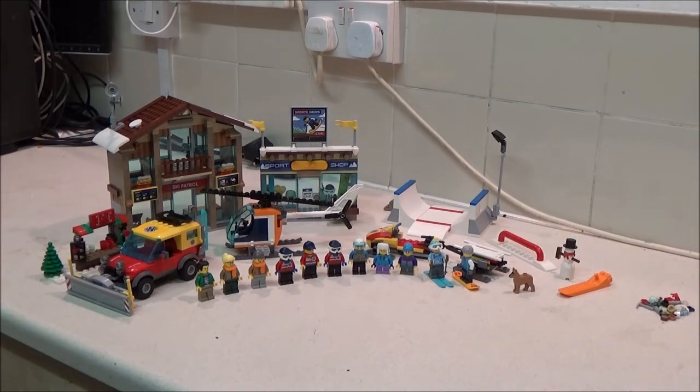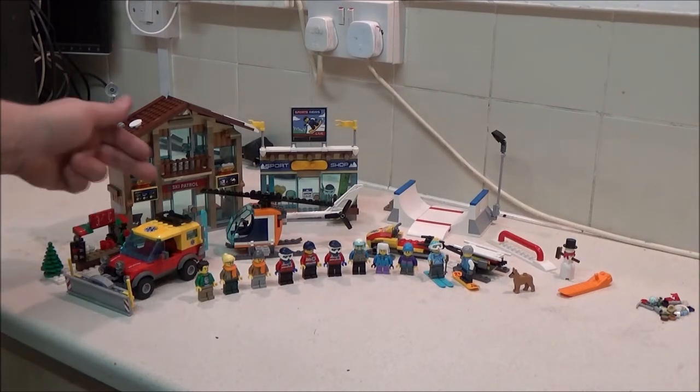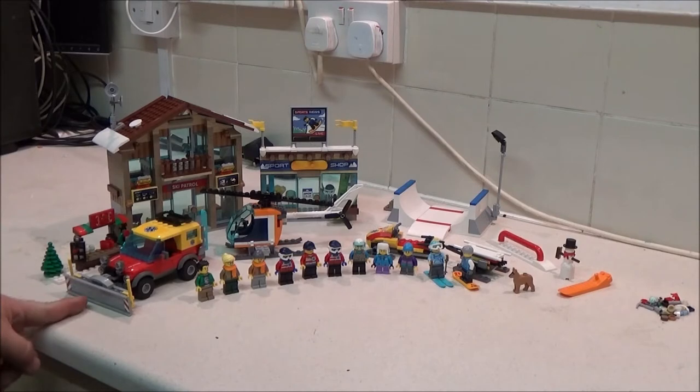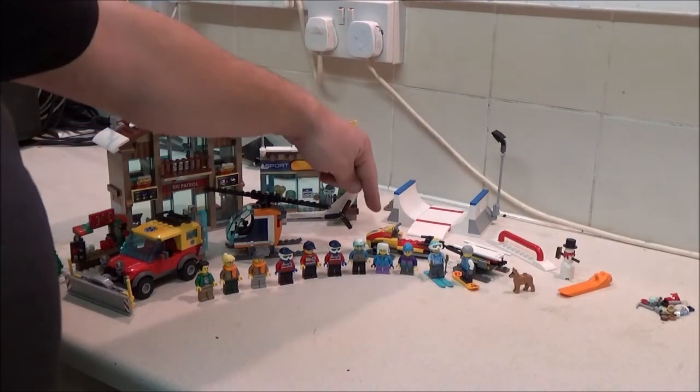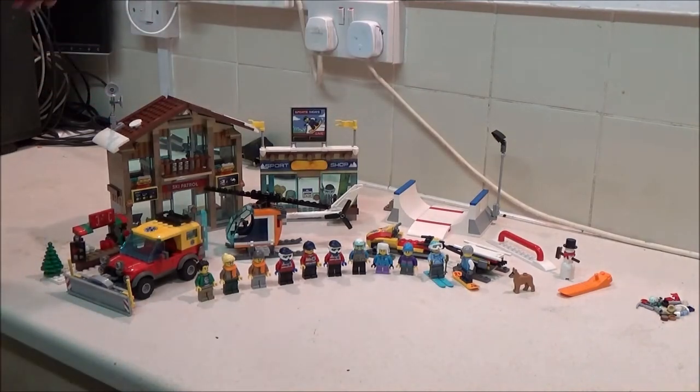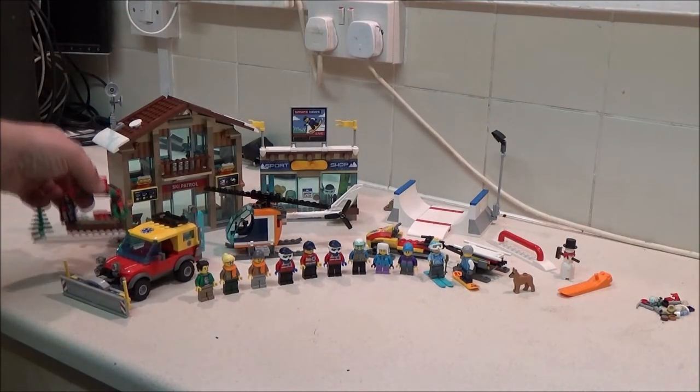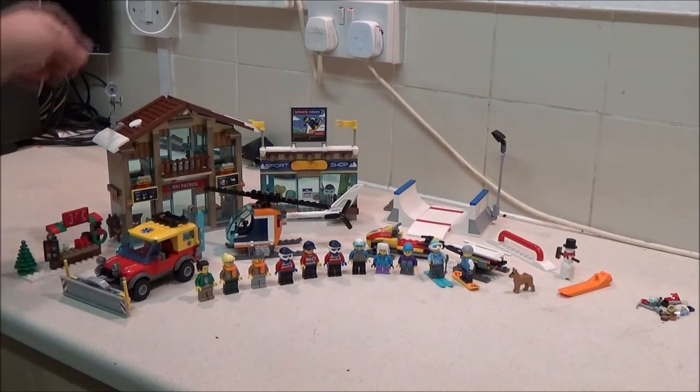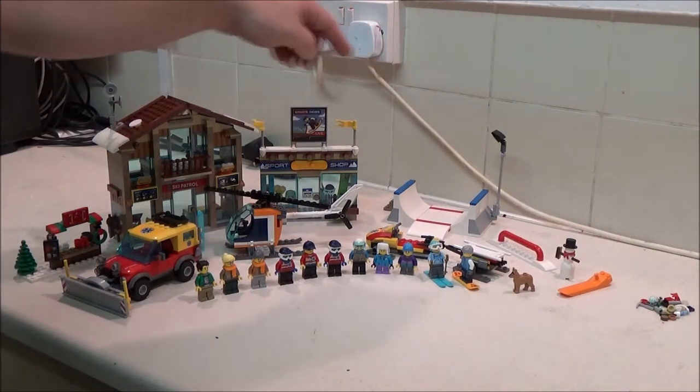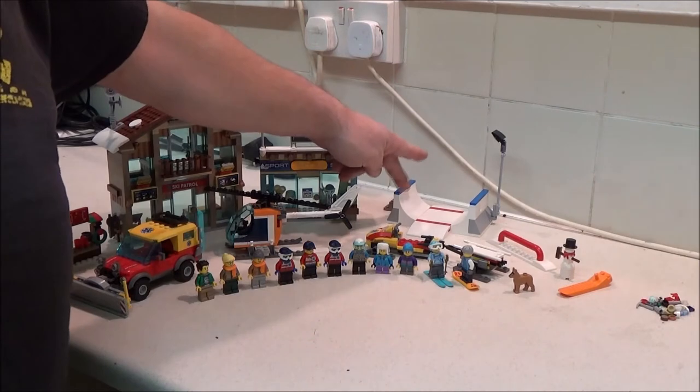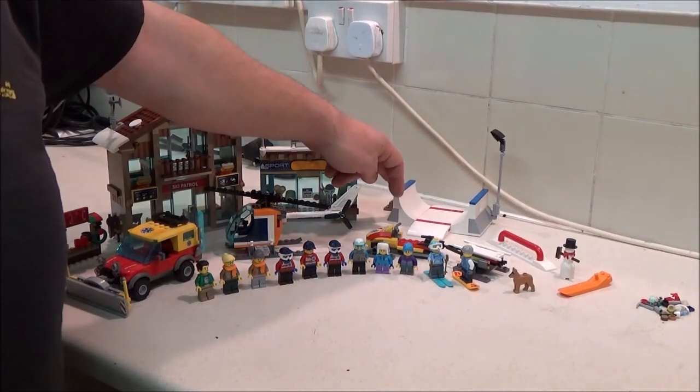As we can see, it's got three vehicles. It's got the Jeep with a detachable snowplough, helicopter, a little snowmobile. It's also got like a little coffee stand here, ski patrol base, a sports shop.